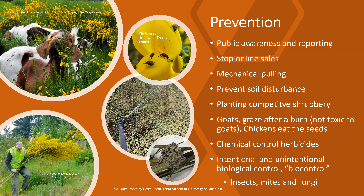Prevention techniques include public awareness and reporting, which is huge — if the public knows about it and can report a sighting, it can stop some of the online sales. The seeds and plants are still sold online and readily available. Mechanical pulling can help prevent spread, and planting competitive shrubbery is beneficial. Goats and chickens after burns can help — chickens can eat the seeds and goats like the tiny tender new growth. Chemical herbicides can be used on new growth. Intentional and unintentional biological controls such as insects, mites, and fungi can attack the plant or its seeds.